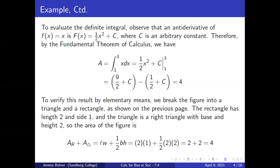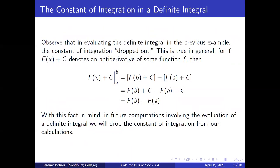To verify this result by elementary means, we break the figure into a triangle and a rectangle. The rectangle has length two and side one, and the triangle is a right triangle with base and height two. So the area of the figure is the area of the rectangle plus the area of the triangle, which is length times width plus (1/2)bh: two times one plus (1/2)(2)(2), which is two plus two, which is four.